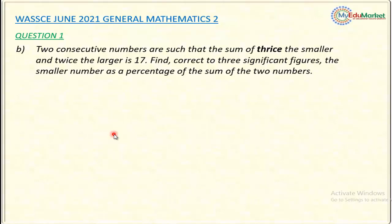This is Y2021 question number 1b. The question reads: two consecutive numbers are such that the sum of three times the smaller and twice the larger is 17. Find, correct to three significant figures, the smaller number as a percentage of the sum of the two numbers. So this is the question I would like to answer now.